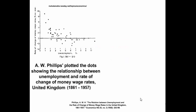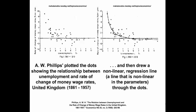Phillips Curve History: In 1958, A.W. Phillips plotted the dots showing the relationship between unemployment and the rate of change of money wages in the United Kingdom, and drew a non-linear regression line — a line that is non-linear in the parameters — through the dots. Thus, we have what is known as the Phillips Curve.